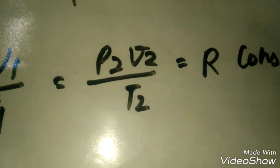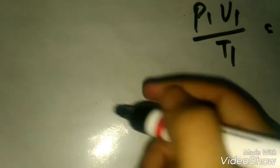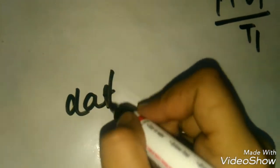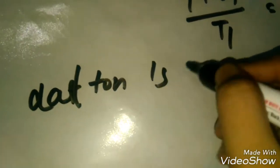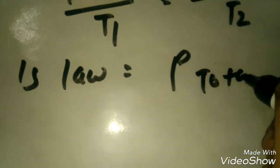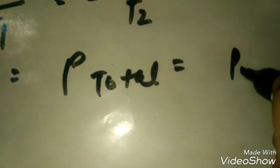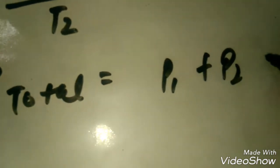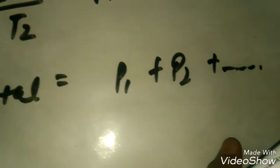Next is ideal gas R constant. Next is what is Dalton's law. Dalton's law: P total pressure, total pressure, P1 plus P2 plus so on, P3, Pn.